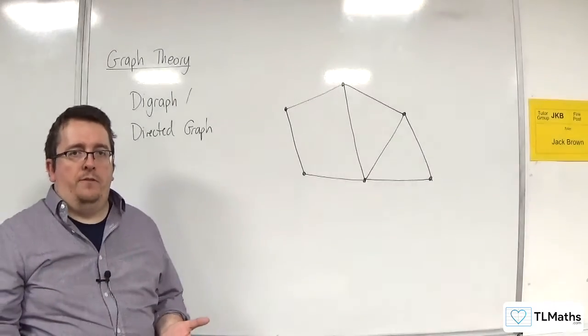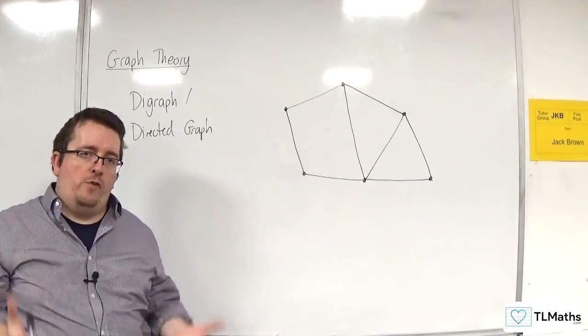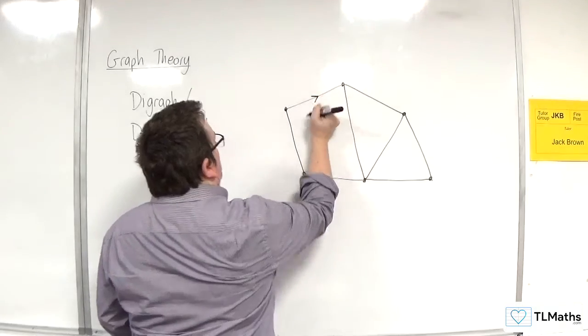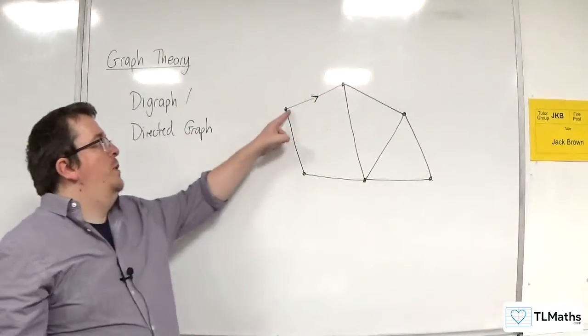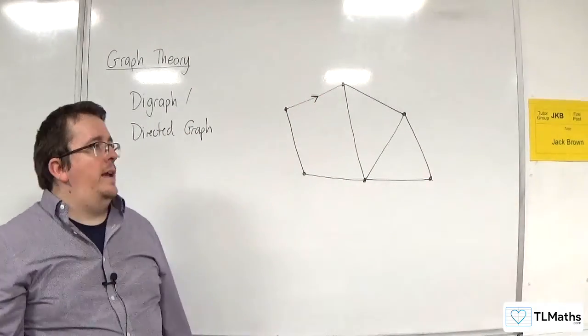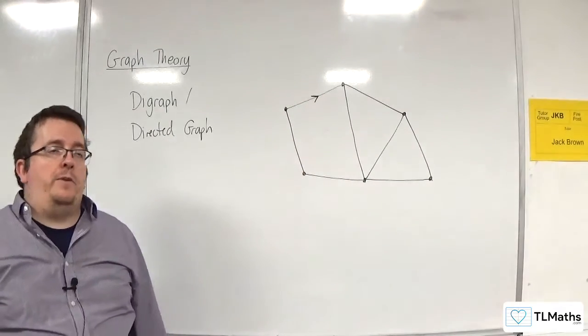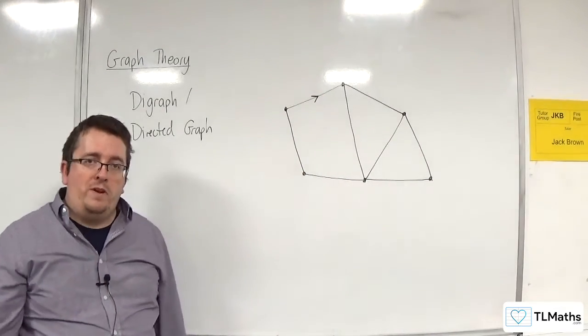A digraph shows you a direction of travel. So for example, maybe we can only go along that route. From left to right along that route. So that could represent a one-way street, for example.